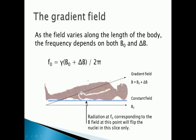To produce an image of the whole body, you gradually change the precession frequency up the body and then apply radio energy at that particular frequency, one slice at a time. This is one of the reasons why an MRI scan takes a long time — you have to change the radio frequency every time you want to image a slice.